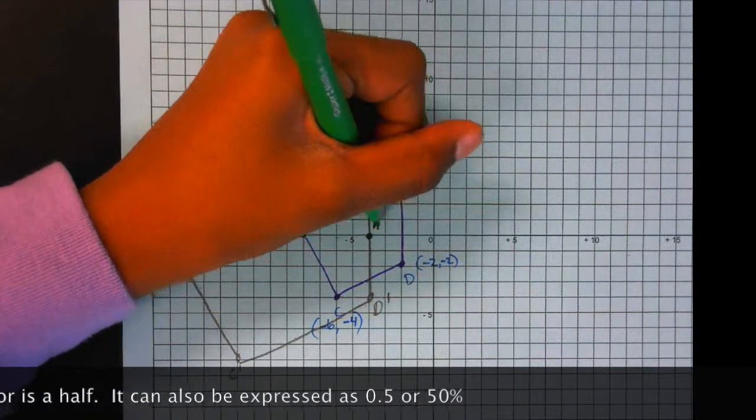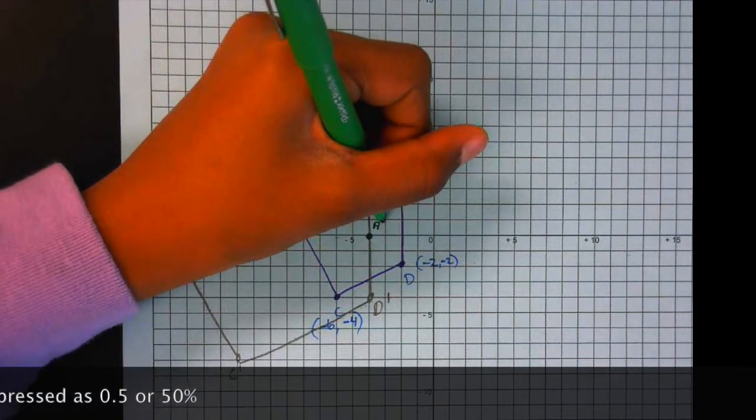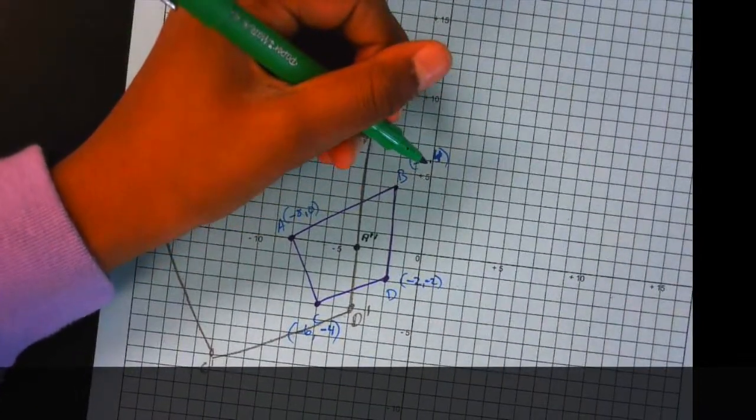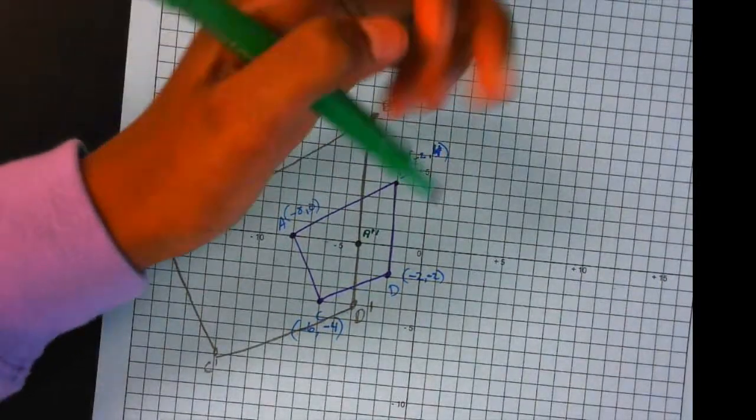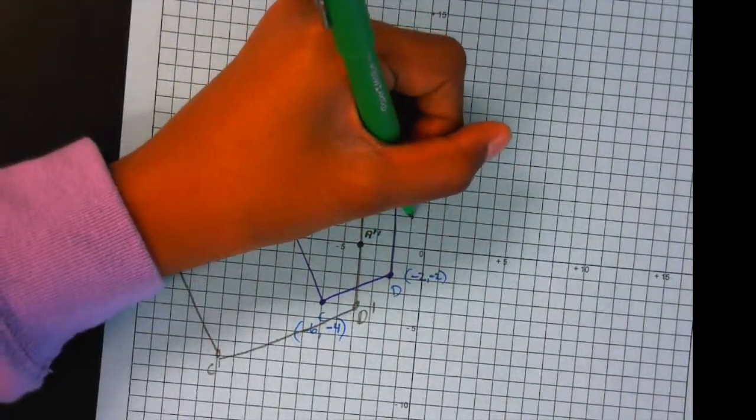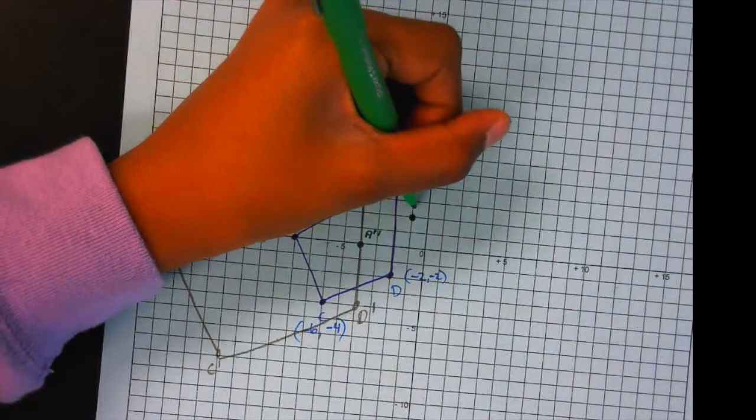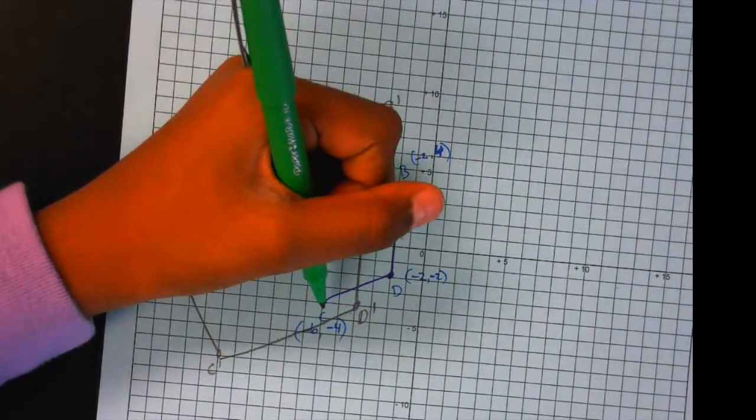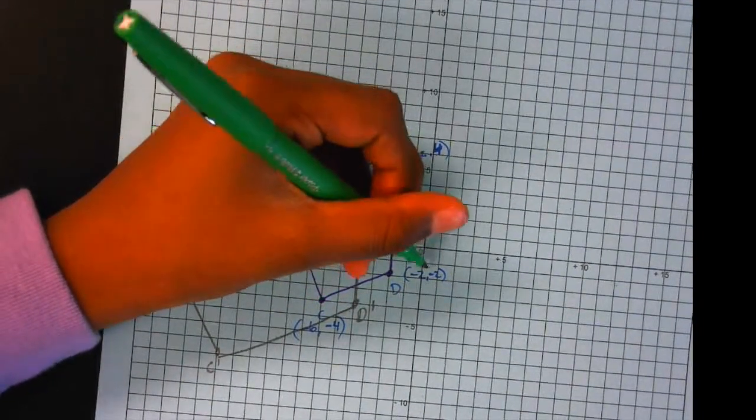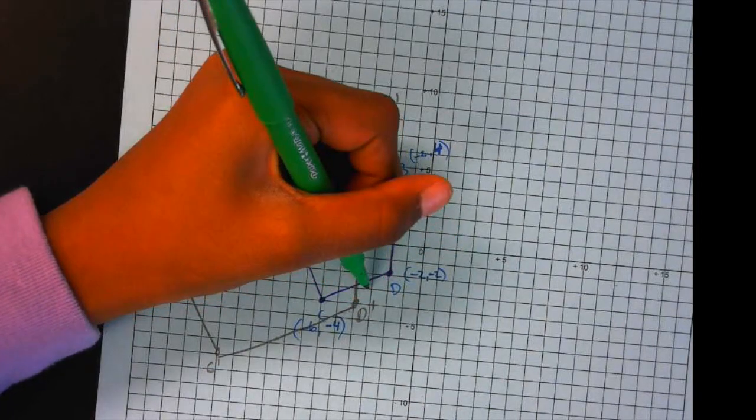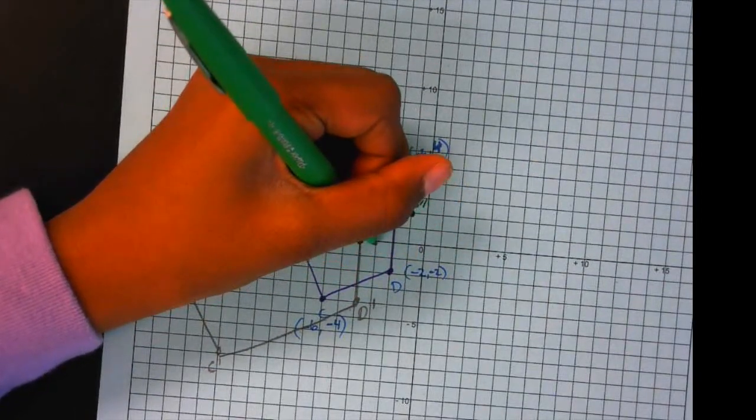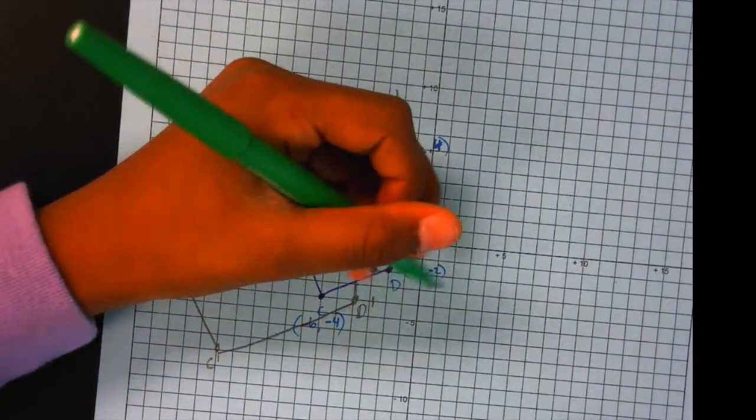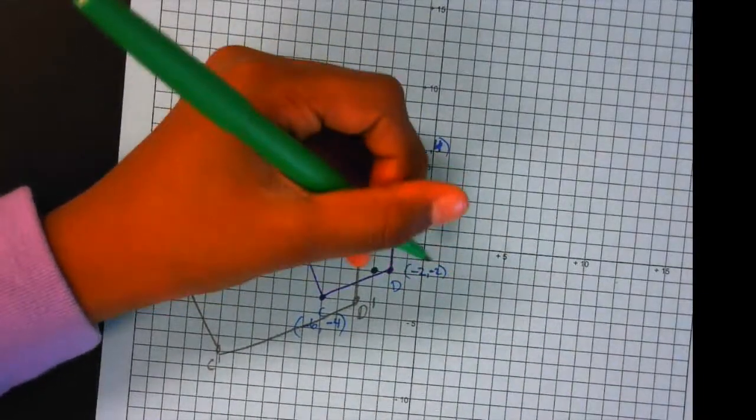Two little guys. And then B would be negative one and two. So one, two, three. And then C we did negative three and negative two.